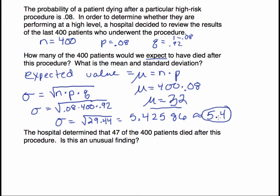How is that helpful? Knowing the rule of thumb - if you take the mean and add two standard deviations, then take the mean and subtract two standard deviations, we can get a usual range of values. The hospital determined that 47 died after this procedure. Is this an unusual finding? To determine whether it's unusual, we need to create that range.